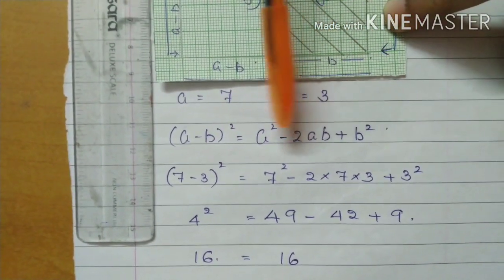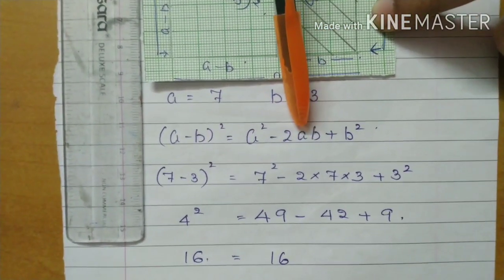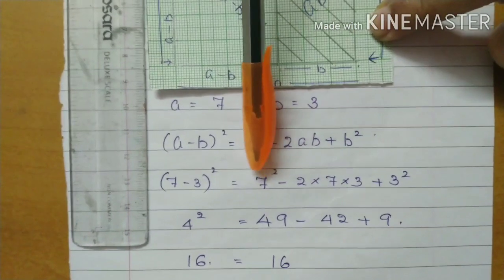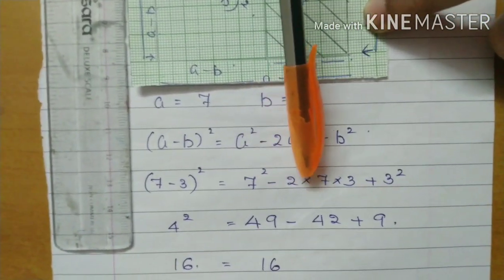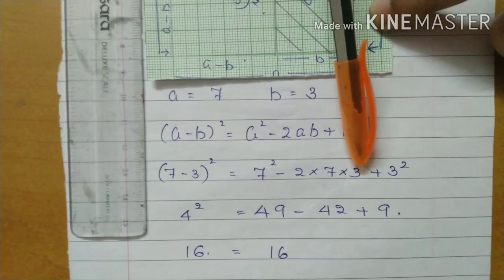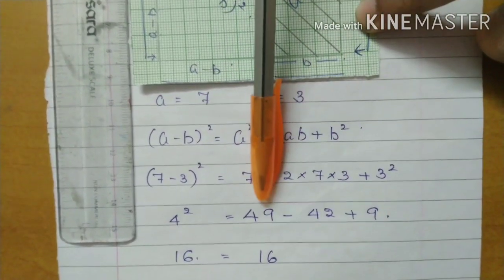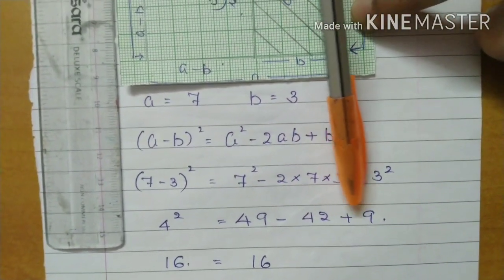When the right-hand side of the identity, A square minus 2AB plus B square, that is 7 square minus 2 into AB, 7 into 3 plus B square.